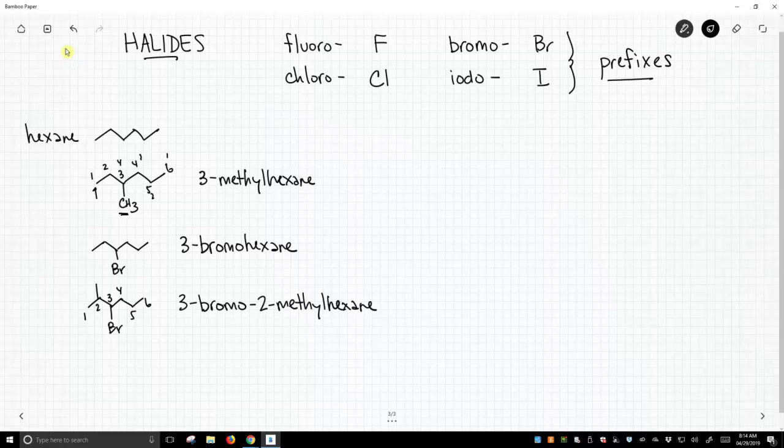Now, very often in organic chemistry, you will encounter multiple instances of the same group. So here is an example of that. Again, sticking with hexane. Here we have three chlorines in one molecule.